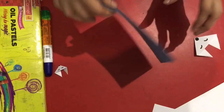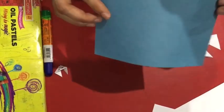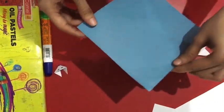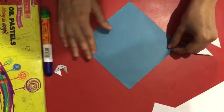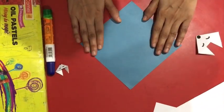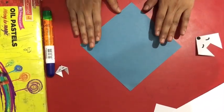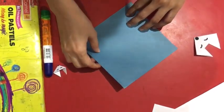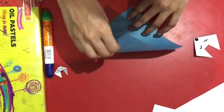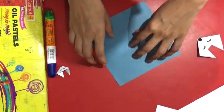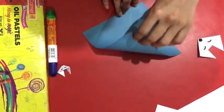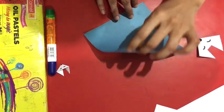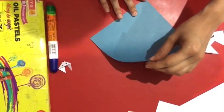Now, take the origami sheet and place it on the table. The first step is to make a triangle fold. You are going to bring this corner to this corner.